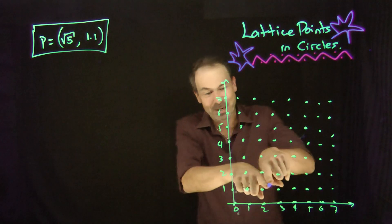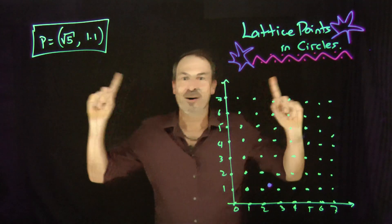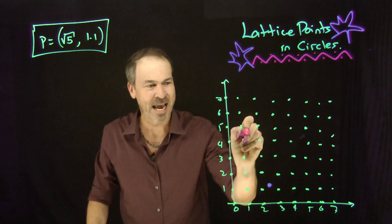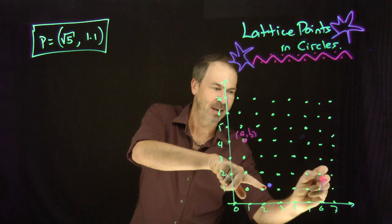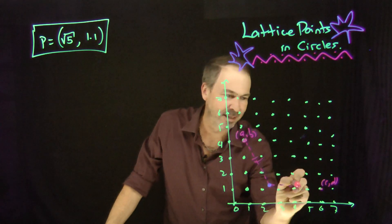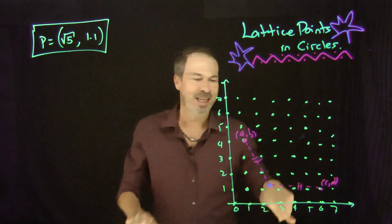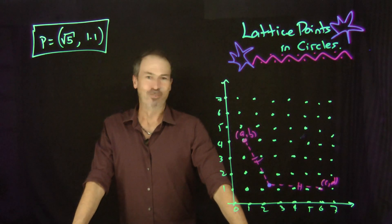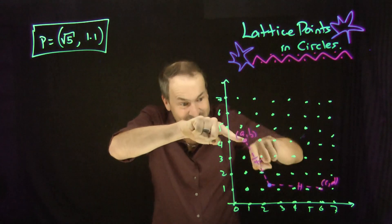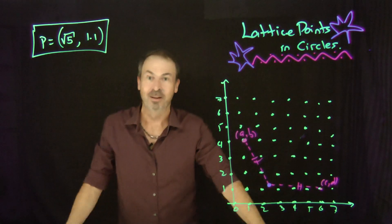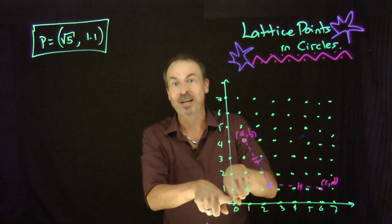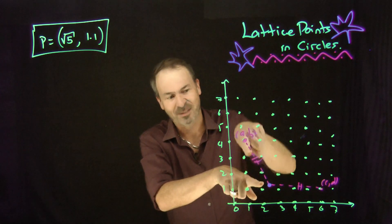So I want to prove that this point here has all distances to different lattice points indeed different — you'll never be in a situation where this point here with coordinates (a, b), both integers, and this point over here with coordinates (c, d), both integers, have equal distances. How could we prove that never happens? Well, we'll do as follows. I'm going to use basically the distance formula, because I want to compare these two distances using the standard school geometry distance formula.